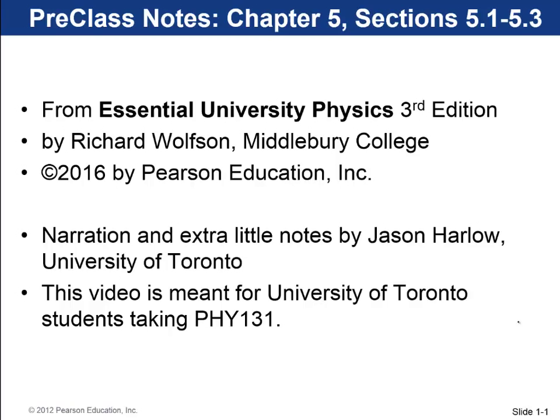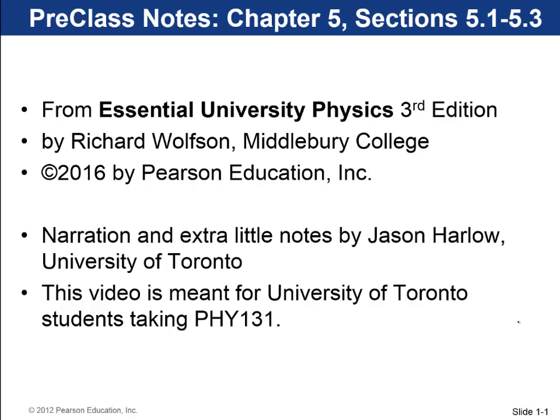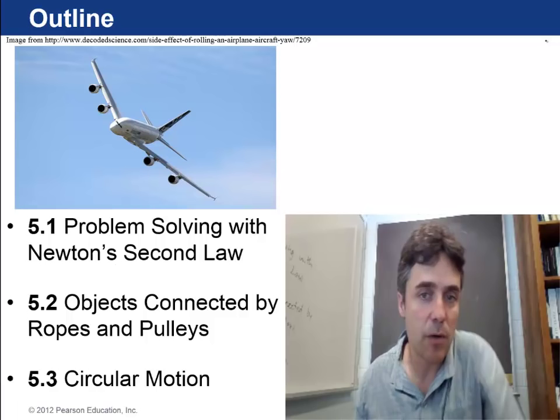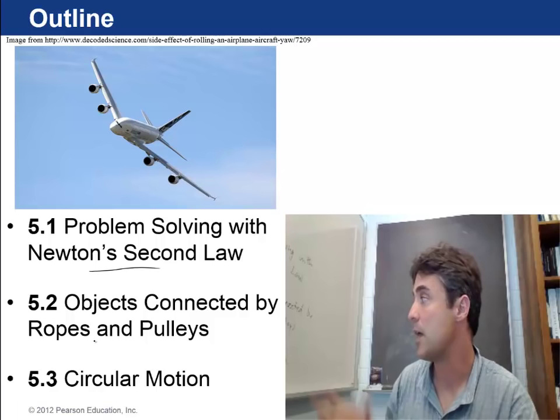Hi there, my name is Jason Harlow. This pre-class video is on chapter 5 of Wolfson, the first three sections. The first section is rather general — problem solving with Newton's second law. The second section is on objects connected by ropes and pulleys. The third section is on circular motion. And the question is: why does an airplane tip when it's turning?